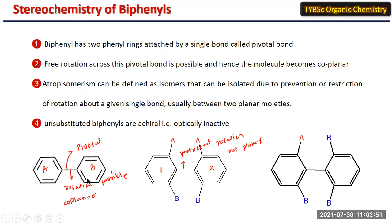The first type is totally unsubstituted biphenyl. Unsubstituted biphenyls are always optically inactive because they possess a plane of symmetry — if you pass a plane through the molecule, it is exactly bisected into two halves. When a molecule possesses any kind of symmetry, it is always optically inactive.